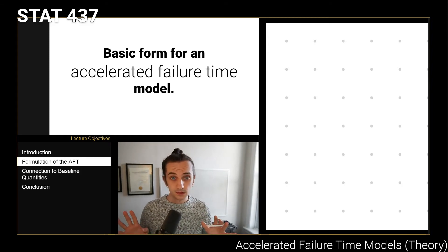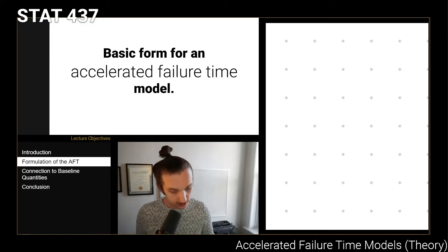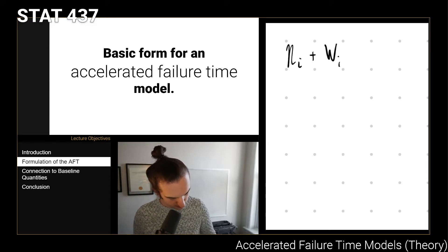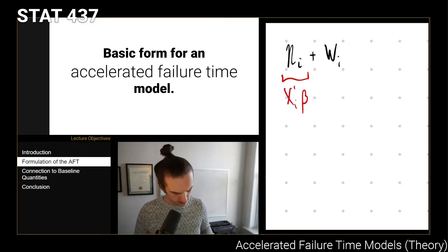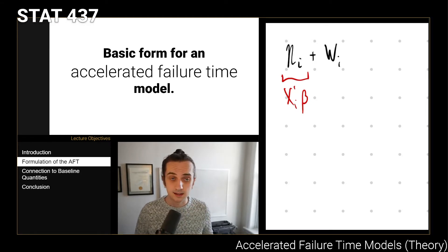As a general rule, we're looking at a model which is going to be composed of a linear predictor and an error term. Typically we think about this linear predictor as being xi transpose beta. In theory you could use something else, but for now we will consider a set of covariates multiplied by some coefficient that we're trying to estimate, and that gives us this linear predictor — it's sort of the mean of the distribution.